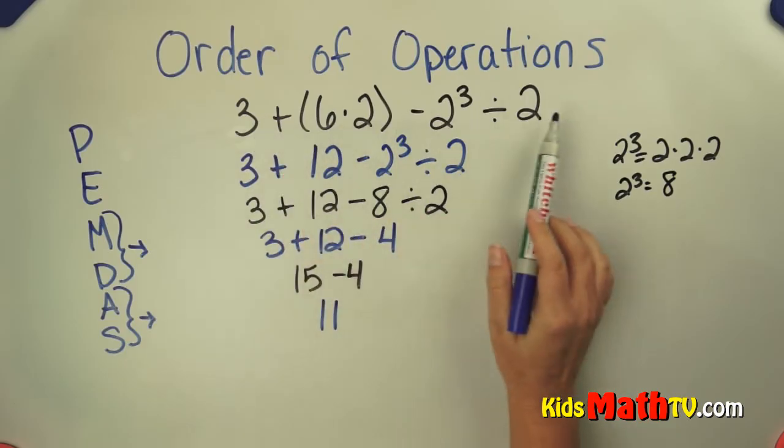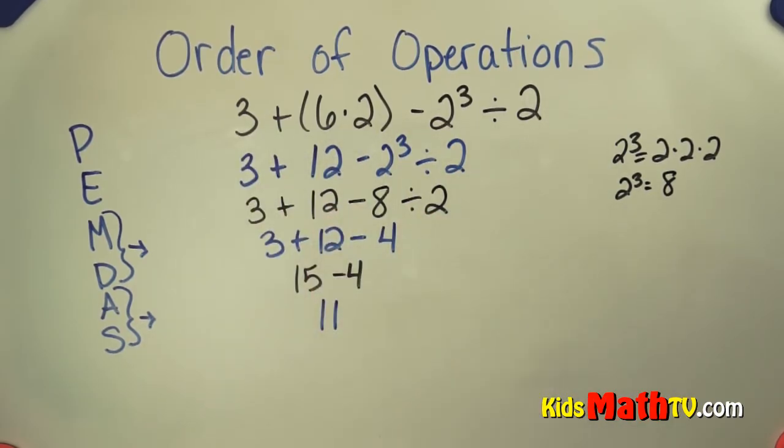So the answer to this whole expression is 11. And that's the end of our lesson on order of operations.